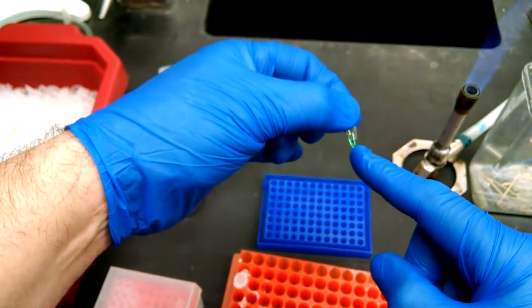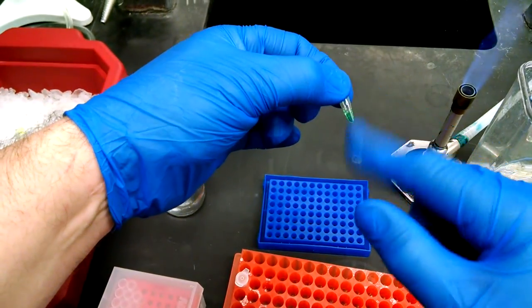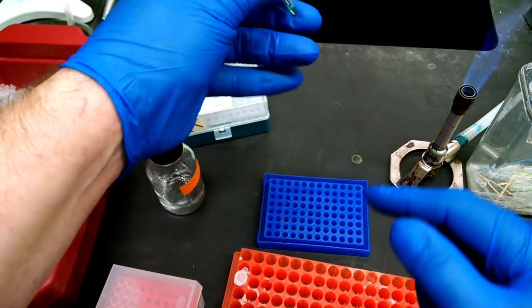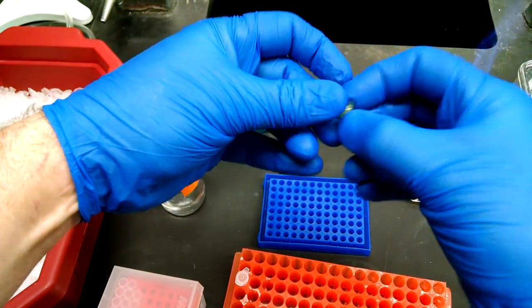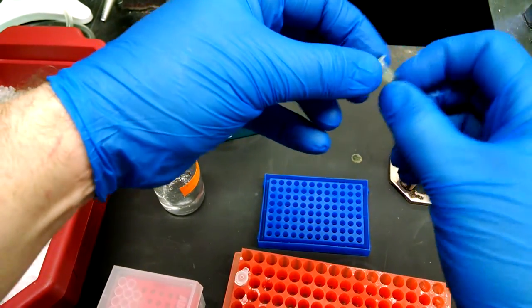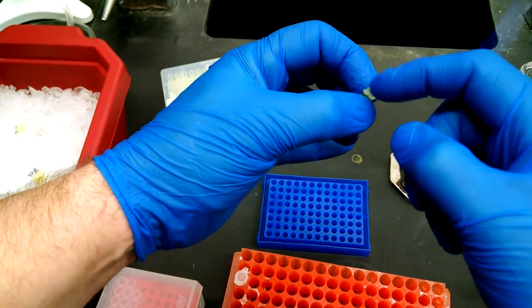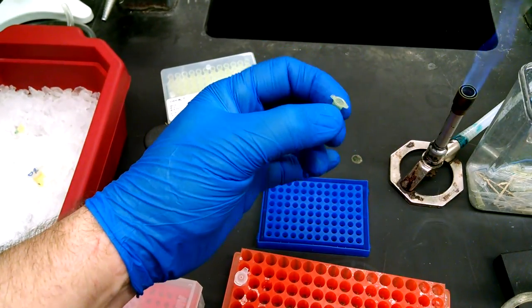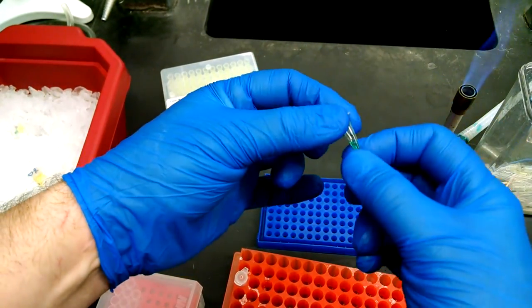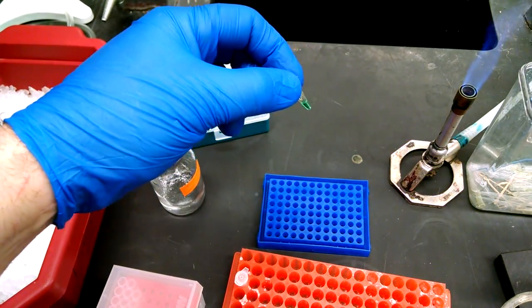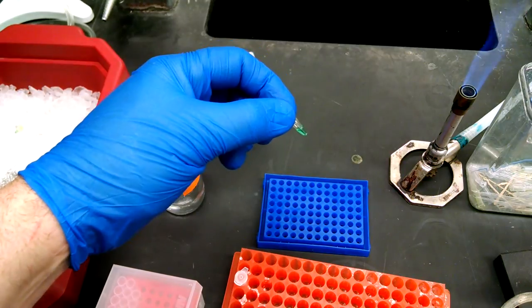Don't vortex this. Enzymes hate to be vortexed. You can give it a little flick to mix. You can invert it to mix. Just make sure the cap was closed first and flick it back down to the bottom of the tube. Put some sort of little symbol on the top to help you find it. You're not going to be able to write your name on it. It's too small. Take it to the PCR machine. Make sure you fill out the sign up sheet so we can find it again. And good luck.